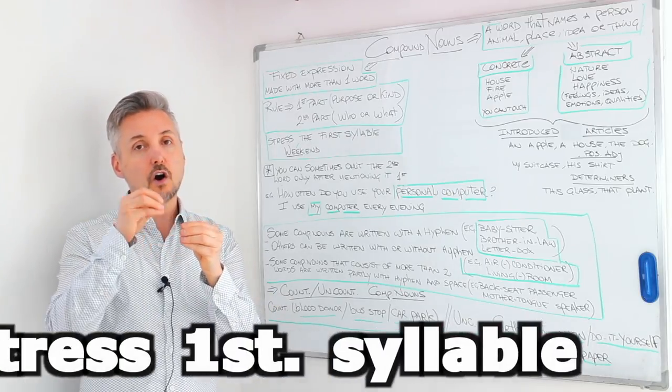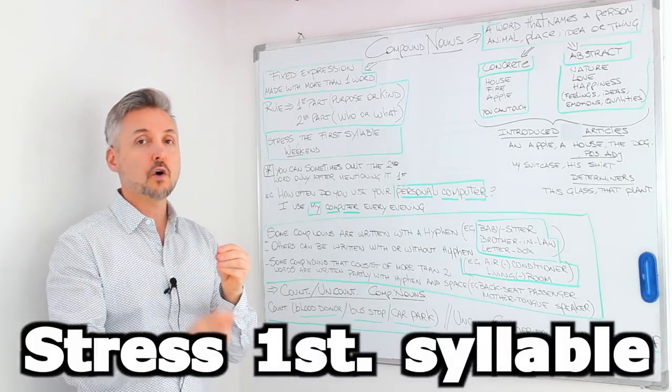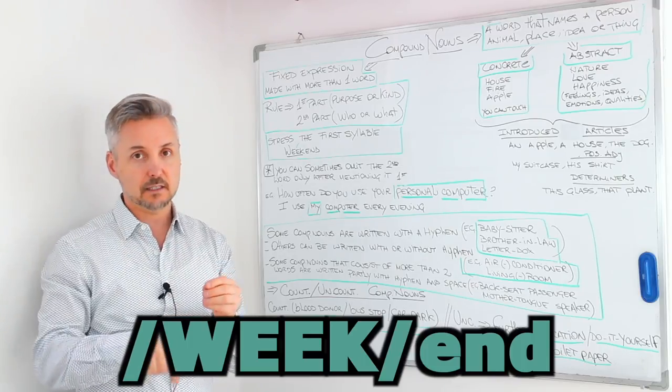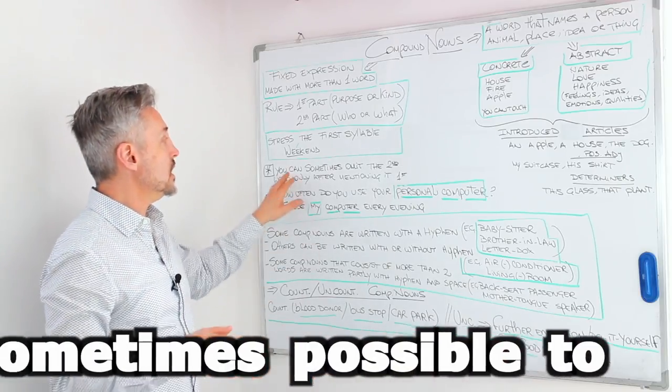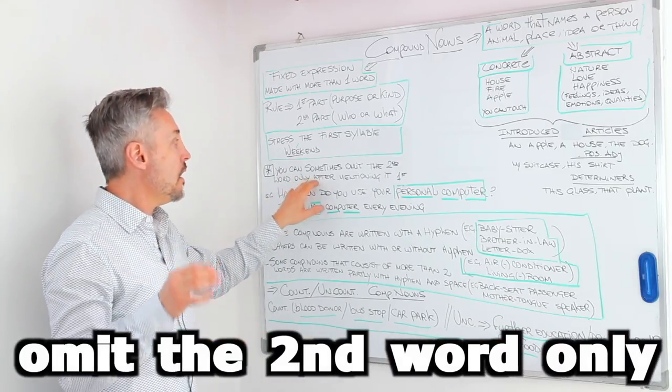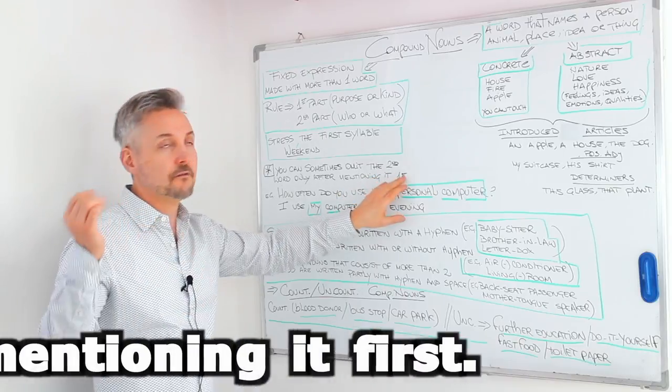The second part usually is who or what. The stress is on the first syllable. So, we can't. Weak and. Not we can't, but weak and. And you can sometimes omit the second word only after mentioning it first.